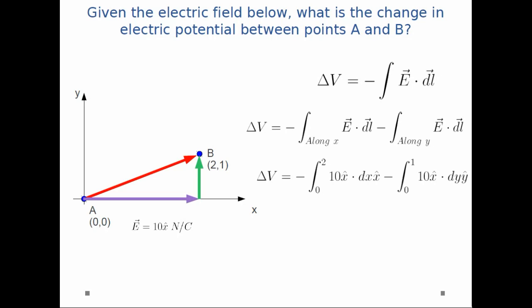I'm going to plug in the values. E is 10 newtons per coulomb in the x-hat. DL along the x-direction is dx in the x-hat, and DL along the y-direction is dy in the y-hat.